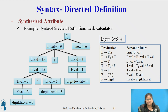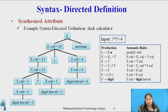This S-attributed definition specifies a desk calculator that reads an input line containing an arithmetic expression involving digits, parentheses, the operators plus and multiplication, followed by a newline character, and prints the value of the expression. For the example 3 × 5 + 4 followed by a newline, the program prints the value 19. The output printed at the root of the tree is the value of E.val at the first child of the root.